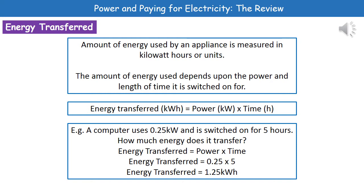If we're considering how much energy an appliance actually uses in a given time, then what we're looking at is something called kilowatt hours, or units. The amount of energy an appliance uses depends on two things: first, the power of it, and second, how long we're actually leaving it switched on for. This leads us to our second calculation, again found on page 2 of the exam booklet. The energy transfer in kilowatt hours equals the power in kilowatts times by the time in hours.